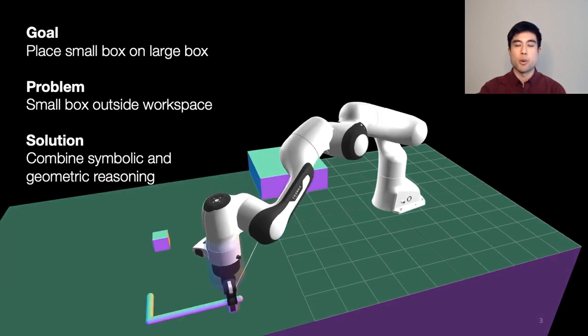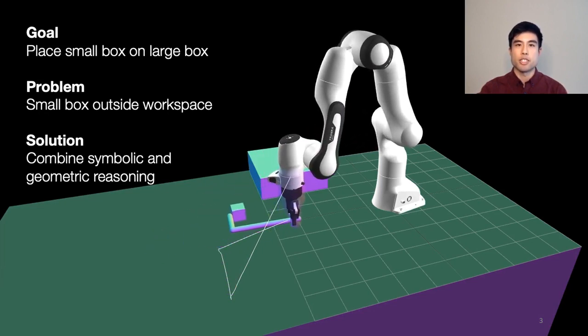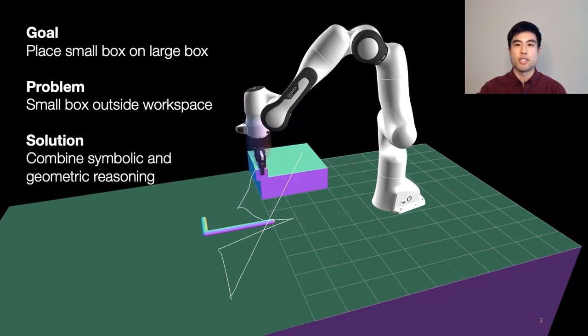Task and motion planning, or TAMP for short, combines these two modes of reasoning: symbolic and geometric reasoning. The output of TAMP is a trajectory plan that the robot can ultimately execute.